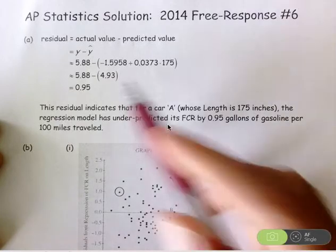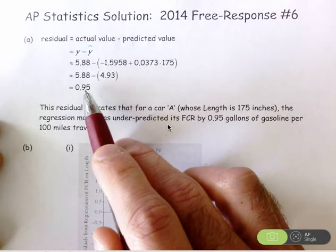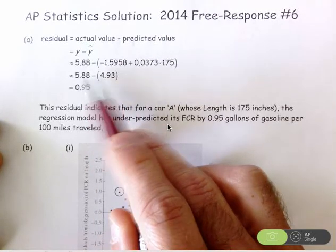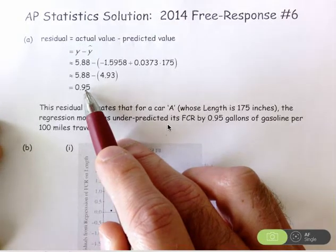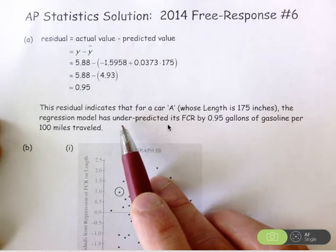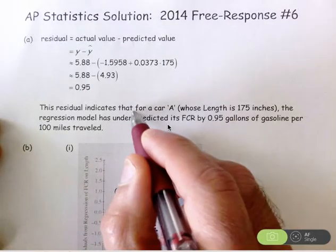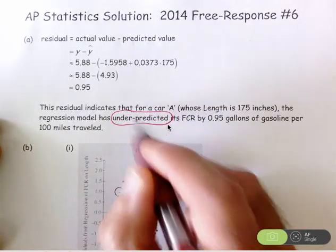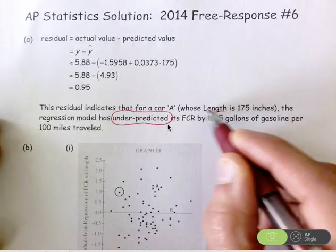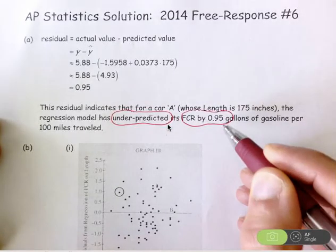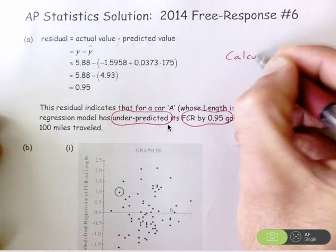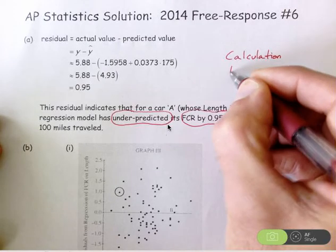In part A, you had to calculate the residual with supporting work. At the very least, you have to show the subtraction problem — actual minus predicted — for where the residual is coming from. You also have to interpret it in context, and that interpretation had to include two components: a direction (under prediction or over prediction) and the magnitude of that prediction. There's a calculation and a supporting interpretation.